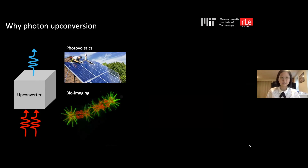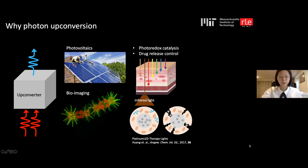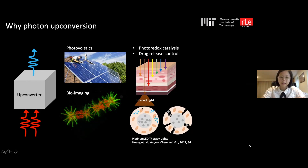Similarly, converting infrared to visible light can enhance sensitivity in bioimaging or enable drug release control. Near-infrared light can penetrate through tissue into the body, and if a drug has upconverting units on its shell, the infrared light hitting these units creates higher-energy photons that break the shell and enable drug release.